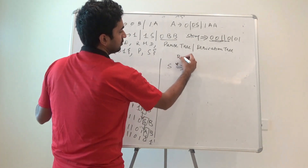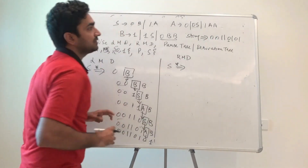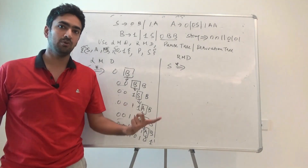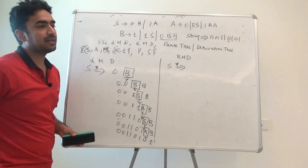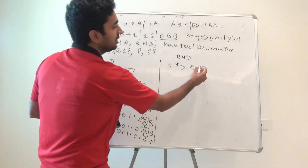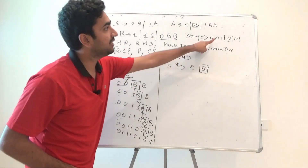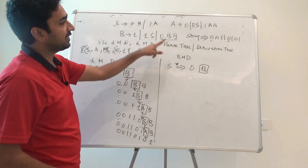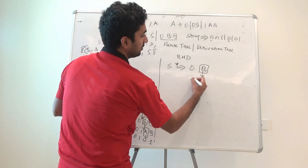Now comes the concept of right-most derivation. Again we have to derive the string 0 0 1 1 0 1 0 1, but now if there are two non-terminals we pick the right-most one. I start with S: the string starts with 0, so I pick S → 0B. There is only one non-terminal B, so I must expand B next.